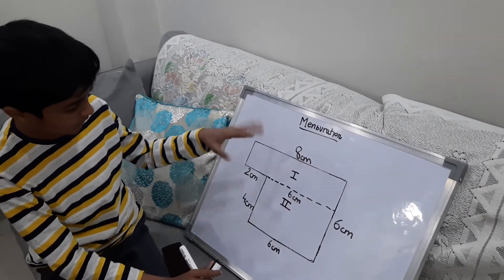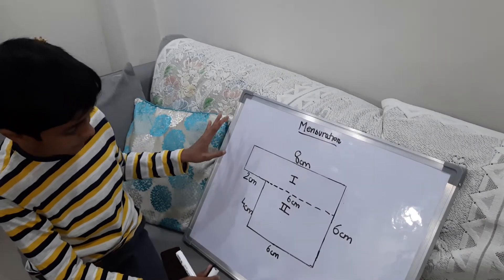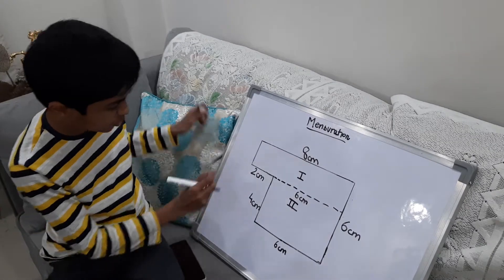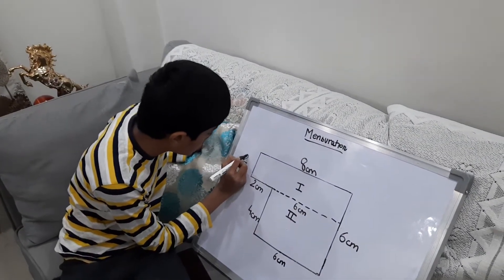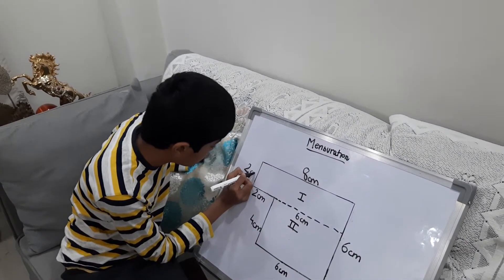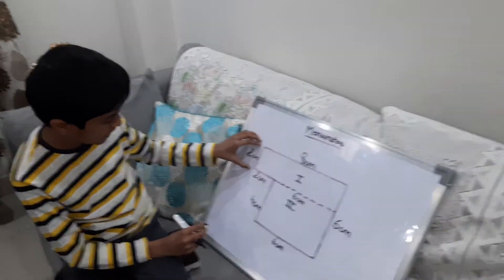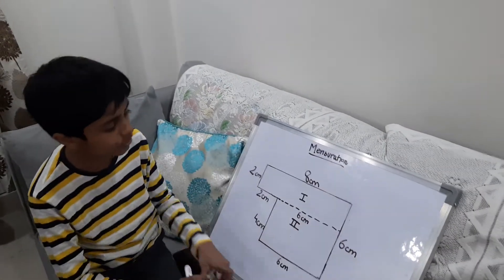To find this, we will do the same technique. We will do 6 minus 4. So 6 minus 4 is 2. We will write 2 cm. If this will be 2 cm, so this will also be 2 cm.